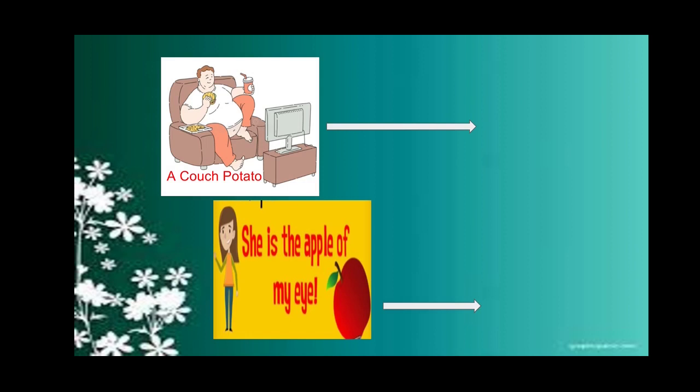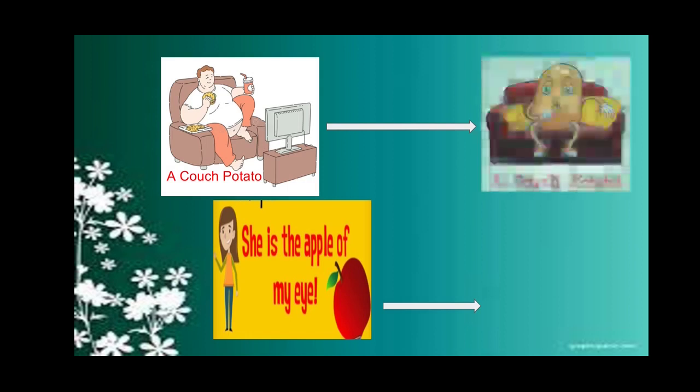Here is a picture of a fat man sitting on a couch — couch means sofa. We can call such a person a 'couch potato,' which is another figure of speech, for someone who just keeps sitting on the sofa and eating at the same time. Another example: 'She is the apple of my eyes,' meaning someone is very dear to you. These were examples of simile and metaphor.